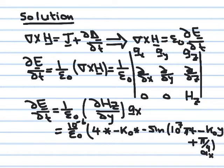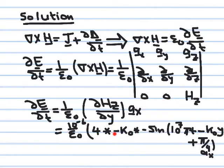Differentiating the cosine gives minus sine, and differentiating the angle minus k_naught y gives another minus k_naught, so the two negatives combine. The amplitude is 4 micro. Remember: the derivative of cosine is minus sine, but the angle contributes another minus k_naught, so you get this expression for the derivative that we then integrate to get the electric field.